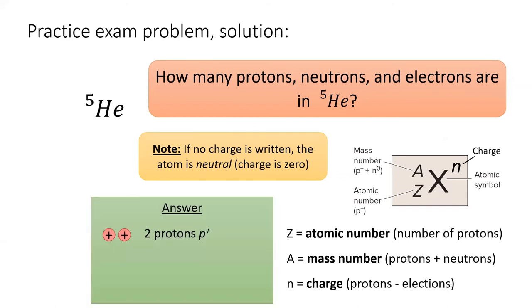Next, we'll determine the number of neutrons from its mass number. Since this atom has a mass number of 5 and contains two protons, it must have three neutrons.